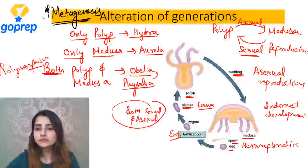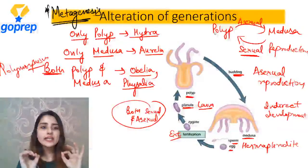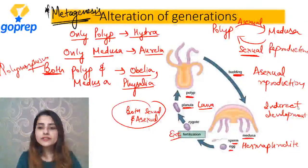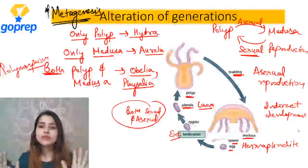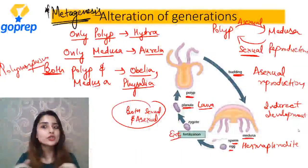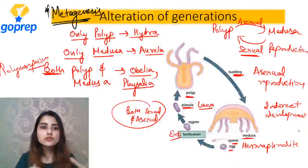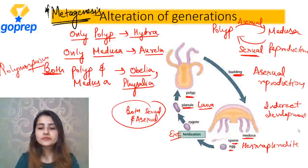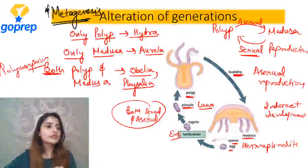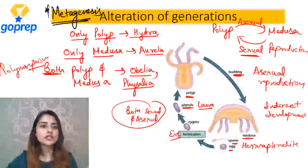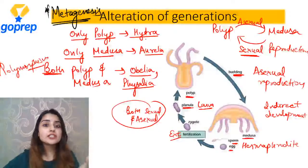Metagenesis - ye ek bahut important term hai jis pe kam se kam four to five times questions have come in NEET examination. Clear - meine almost saare characteristics Coelenterata ke ek hi page par daal diye. Alteration of generation matlab - polyp ka medusa mein, medusa ka polyp mein convert hona. Polyp agar medusa mein hona chahta hai toh asexual, medusa polyp mein hona chahta hai toh sexual reproduction. This term metagenesis is very important.